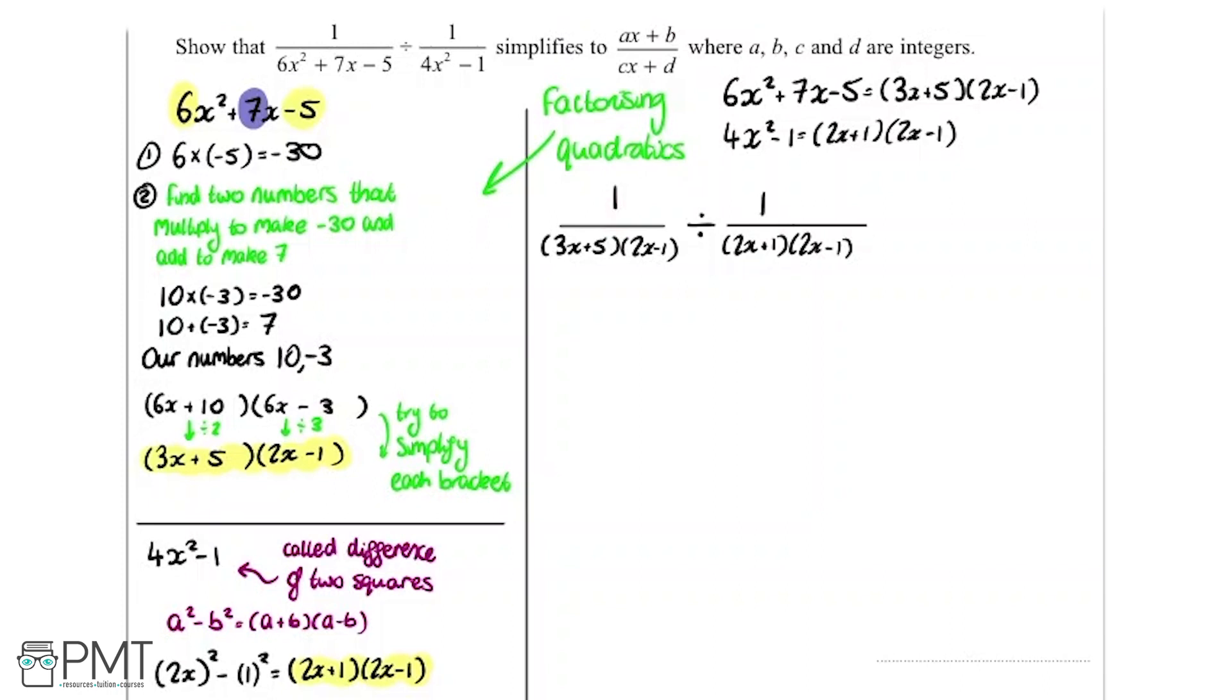And we can use this rule here. If we have a over b as a fraction, divided by c over d, that equals a over b multiplied by d over c,